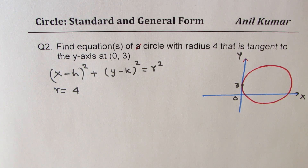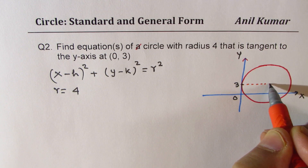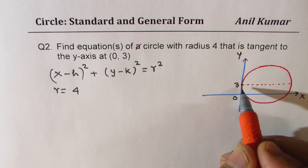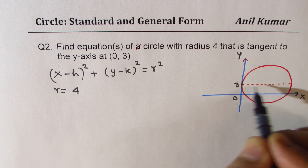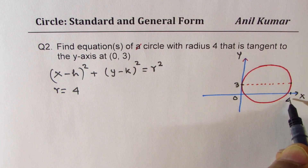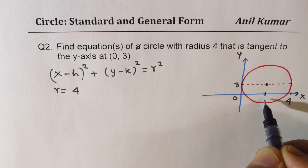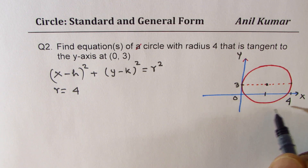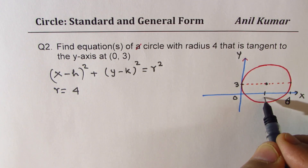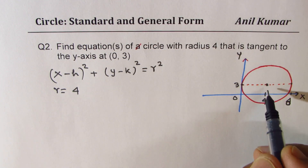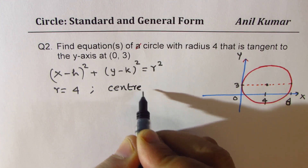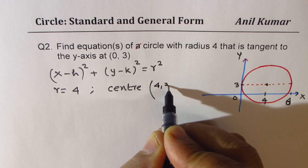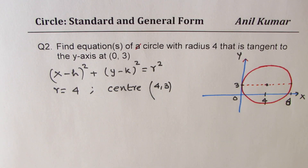Since we have a tangent given, and we know the radius, if I draw a horizontal line from the tangent point, the radius extends 4 units. So this point will be at x = 4. Since the y-value stays at 3, the center of the first circle is at (4, 3).